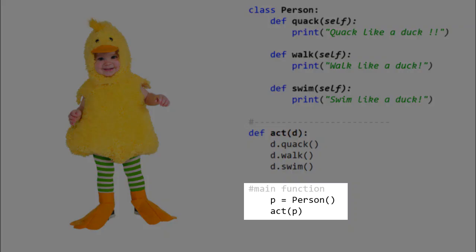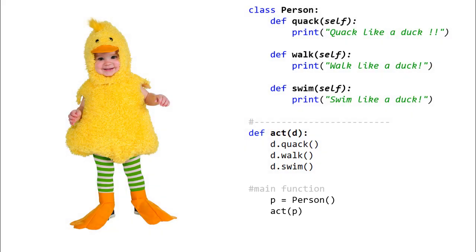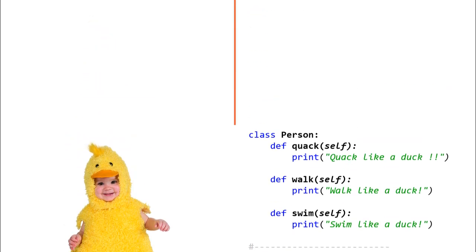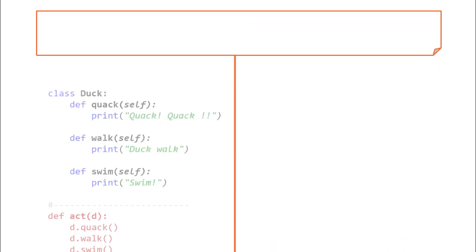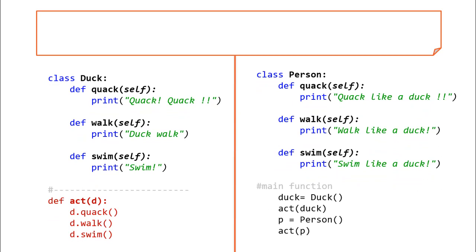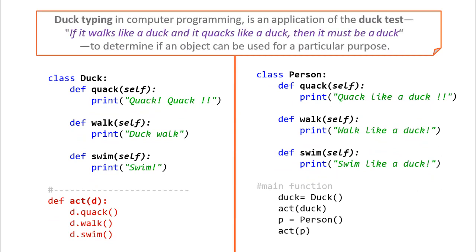Now, when I create an object of person class from the main and pass it to the same function, act, even then there won't be any error and execution will be smooth. This is possible because of duck typing. Interesting definition of duck typing in computer programming is about application of duck test. What it means is, if it walks like a duck and it quacks like a duck, then it must be a duck.